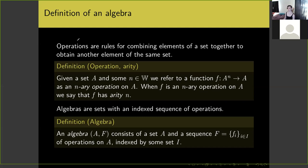Operations are rules for combining elements of a set together to get another element from that same set. Formally, if I have some set A and some whole number n — which is allowed to be zero — then we refer to a function f taking A^n to A as an n-ary operation on the set A. When f is an n-ary operation on A we say that f has arity n.